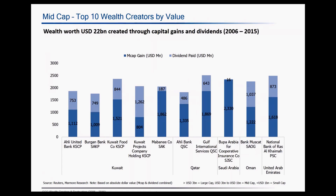This is the mid-cap segment for the top wealth creators in terms of value. Unlike the trend noticed in large cap where Saudi and UAE companies dominate the space, we have a large presence from companies based in Kuwait in this segment. The total wealth created by these top 10 mid-cap companies amounts to almost 22 billion, both in terms of capital gains and dividends.